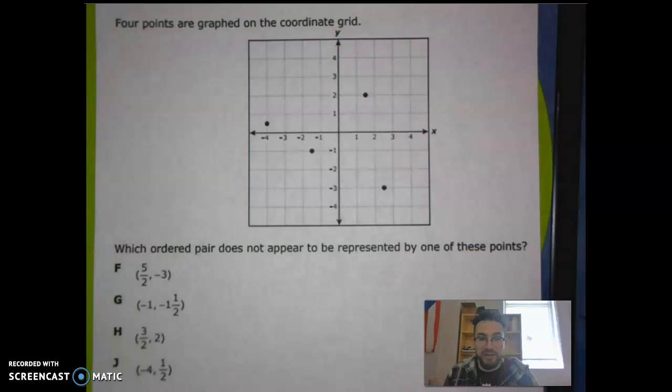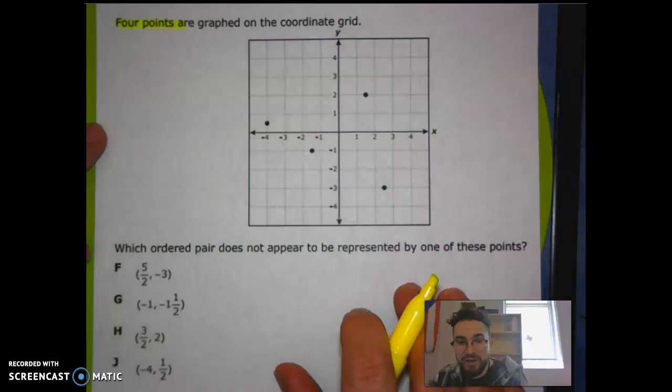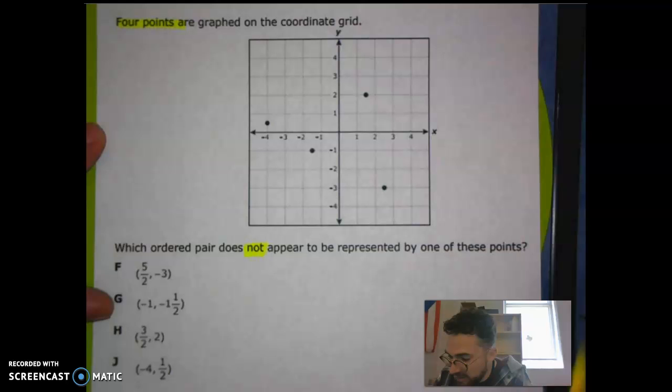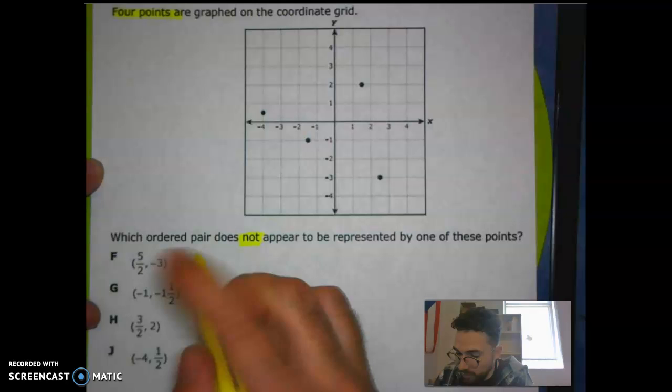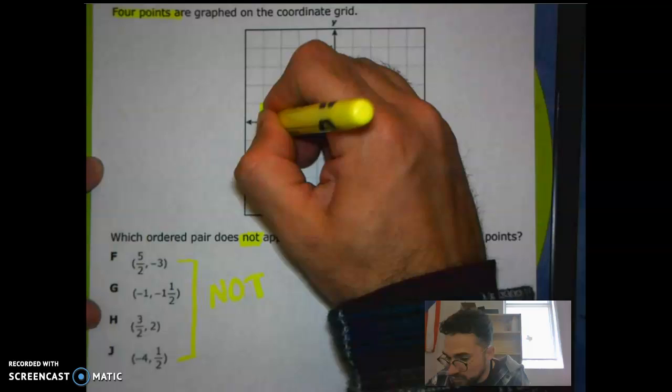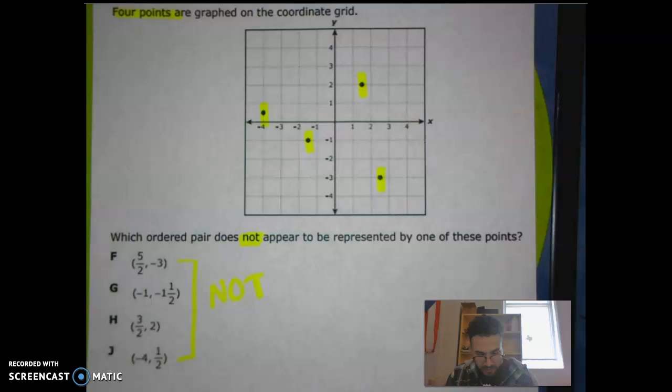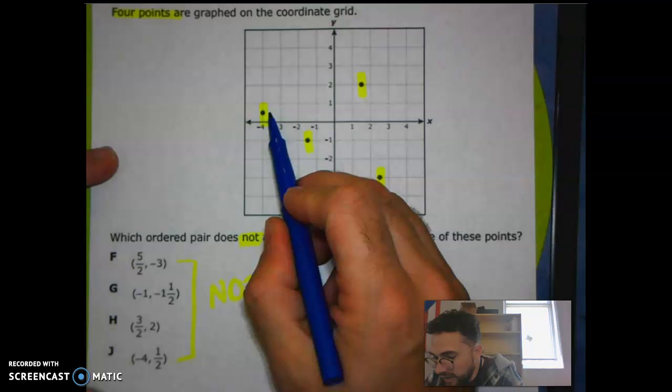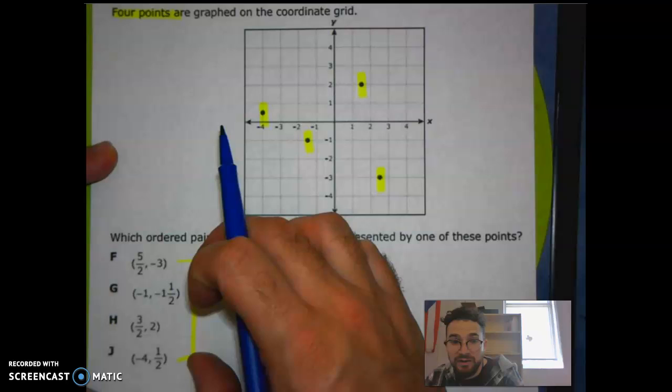Now, let's take that information that we just quickly discussed. I know I went kind of quickly on it, but if you need to, remember this is a video. You can go back, rewind it, listen to it again. Here what we have now is an example. It says we have four points graphed on the coordinate grid. Which ordered pair does not appear to be represented by one of these points? So we're looking for which one does not show up on the coordinate plane.